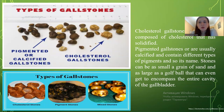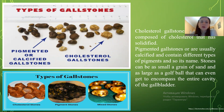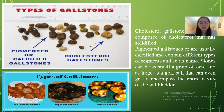Cholesterol gallstones are mainly composed of cholesterol that has solidified. Pigment gallstones are usually calcified and contain different types of pigment. Stones can be small — the size of a grain of sand — or as large as a golf ball that can fill the entire cavity of the gallbladder. You may see on this picture variants of gallstones: pigmented or calcified gallstones and cholesterol gallstones.